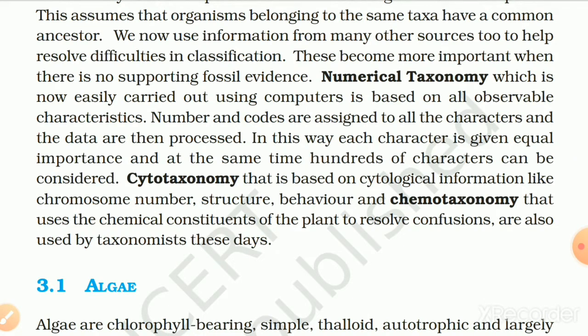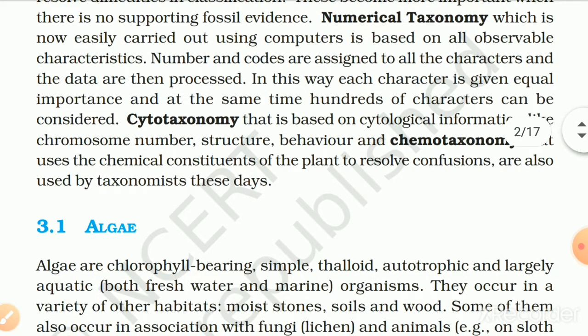We now use information from many other sources to help resolve difficulties in classification, which becomes more important when there is no supporting fossil evidence. Numerical taxonomy, now easily carried out using computers, is based on all observable characteristics. Numbers and codes are assigned to all the characters and the data is processed, giving each character equal importance while hundreds of characters can be considered. Cytotaxonomy, based on cytological information like chromosome number, structure and behavior, and chemotaxonomy, which uses chemical constituents of the plant to resolve confusion, are also used by taxonomists.